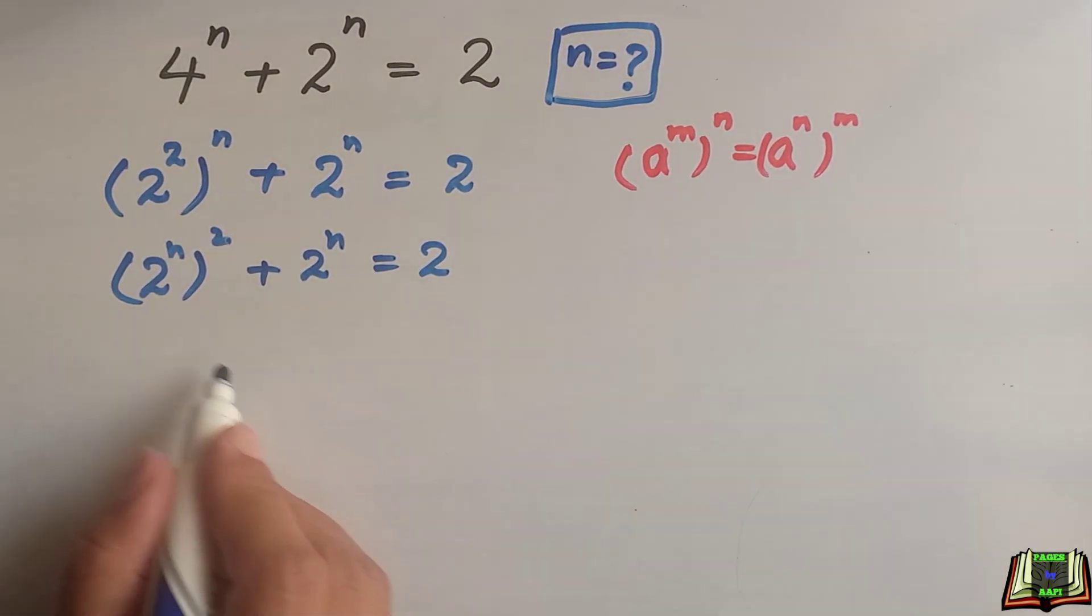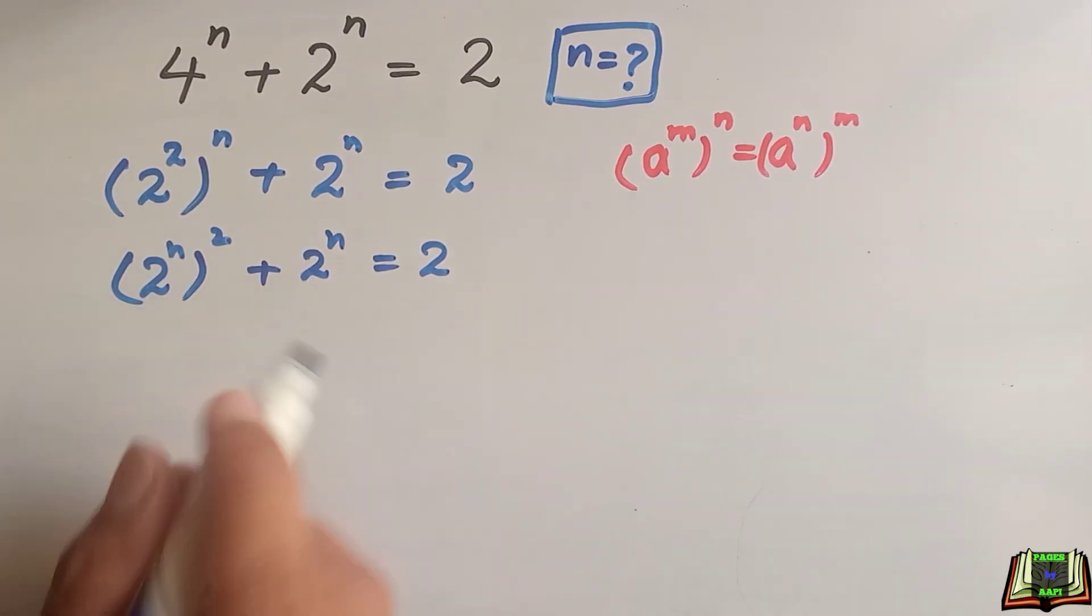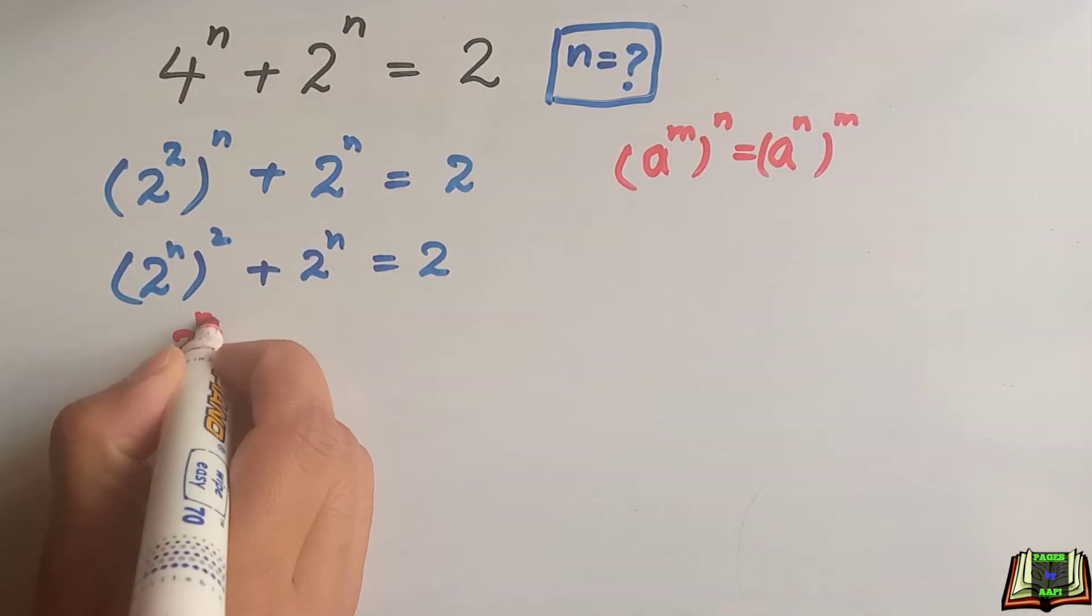Now we can see this 2 to the power n, 2 to the power n. We are going to suppose some values like 2 to the power n is equal to some value t.